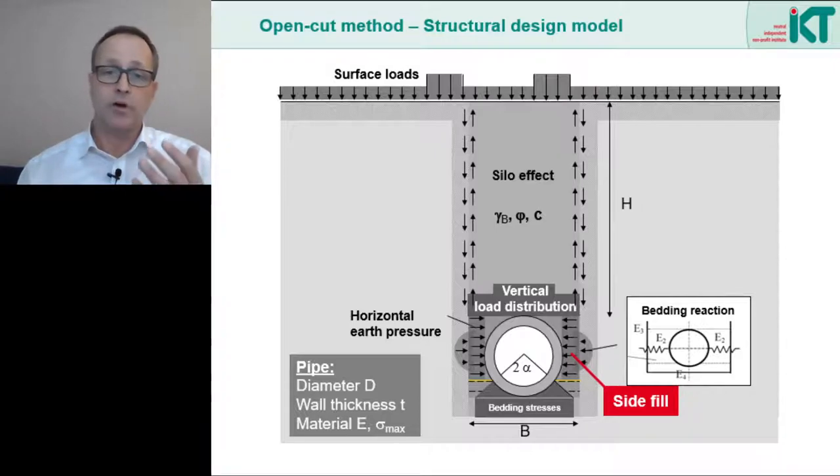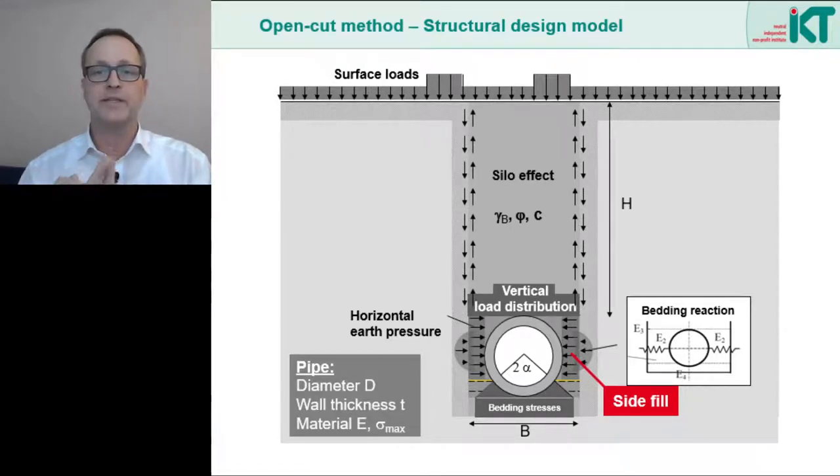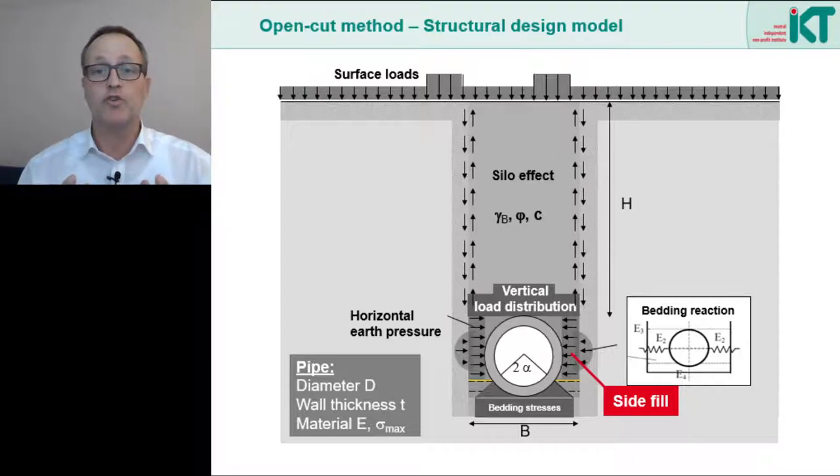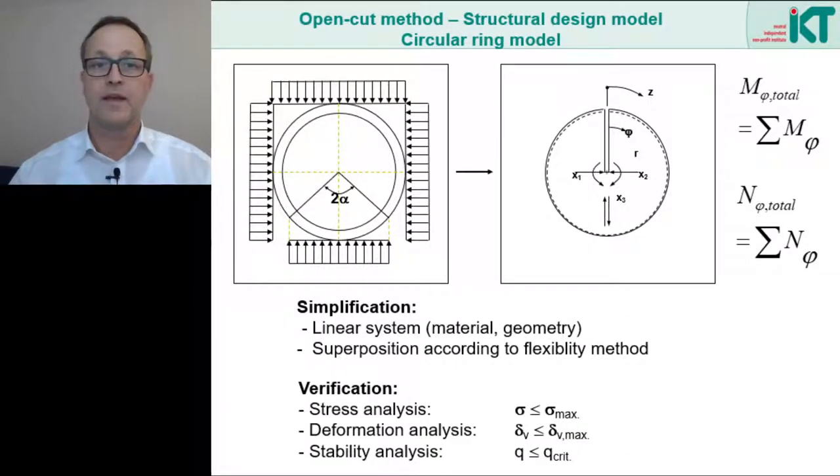So we now know the structural design model. In practice, we must pay particular attention to the following three points. Number one, if Kappa is smaller than one, then obviously silo-theory and friction on the trench walls were taken into account. Here the question is, can we really guarantee this friction in the long run? Or for example, are further construction measures to be expected, which will change the soil conditions. Number two, the side fill must be very well compacted, so that it can absorb vertical loads as assumed in the structural design. And finally, number three, the support must be even over the calculated angle. Only then is our pipe well bedded, like an egg in an egg cup.